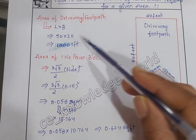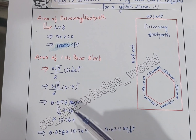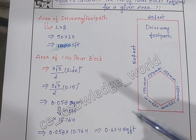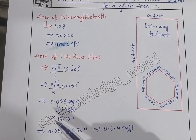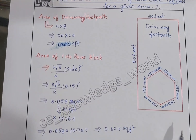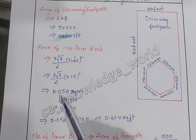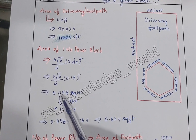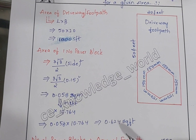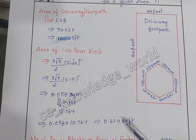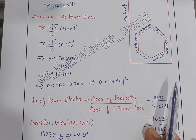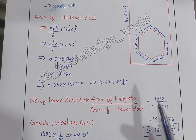The area is in square feet, so we have to convert square meters to square feet by multiplying with 10.764. So 0.058 square meters × 10.764 gives us 0.624 square feet — this is the area of one paper block.